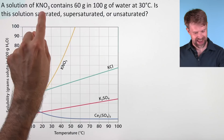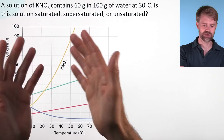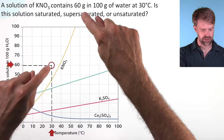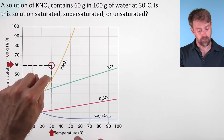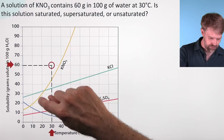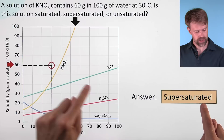One more. A solution of KNO3 contains 60 grams in 100 grams of water at 30 degrees Celsius — is it saturated, unsaturated, or supersaturated? Here's the solubility and here's the temperature. We see where they intersect. We're paying attention to potassium nitrate, so we look at this point in relation to its curve. It is above this curve, representing a value greater than the theoretical solubility maximum. Since we're above the maximum temporarily, we're looking at a supersaturated solution.